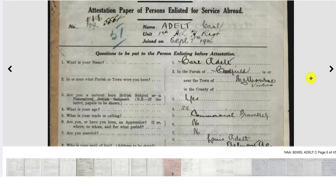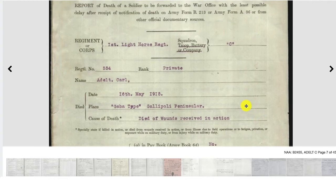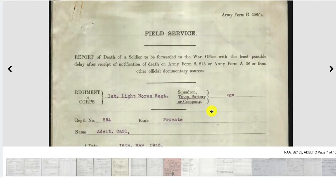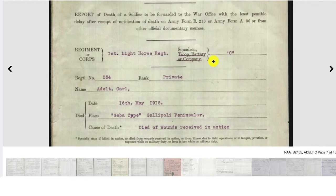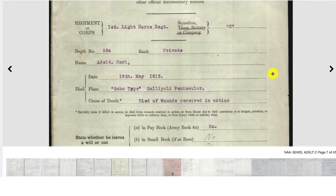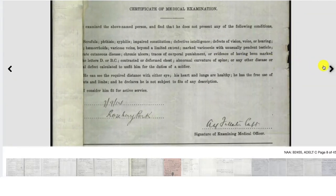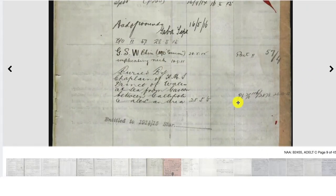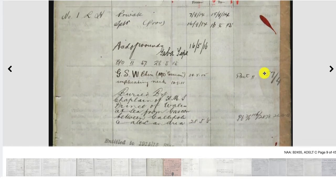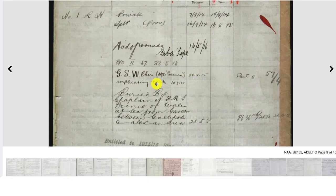Scrolling further through the records, we can find information about Carl's death. This first document is a report of the death of a soldier giving very vague details — died of wounds received in action on the Gallipoli Peninsula. Further details later in the report tell us he had a GSW, a gunshot wound, to the chin implicating his neck, which was the cause of his death.